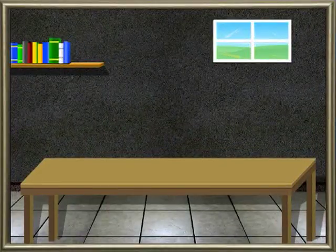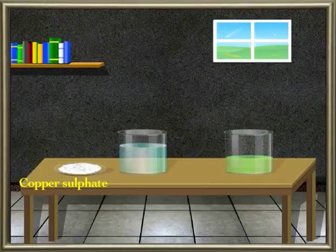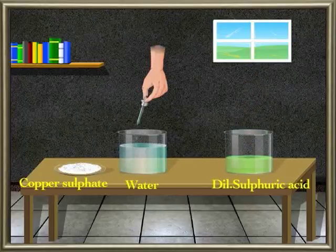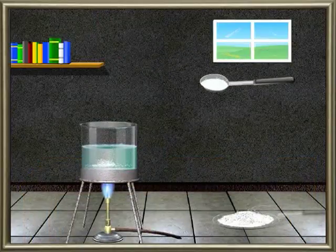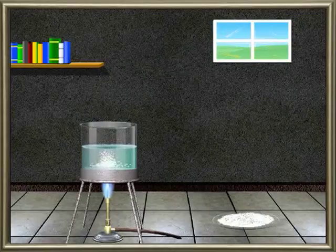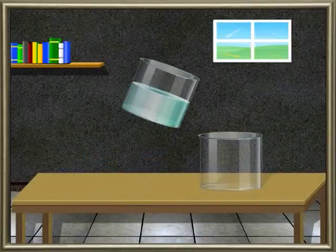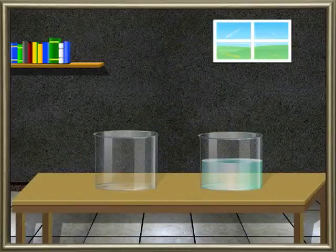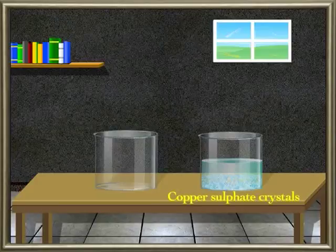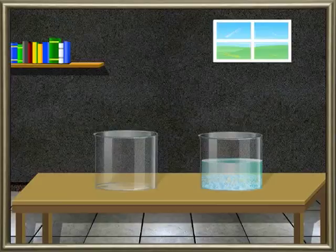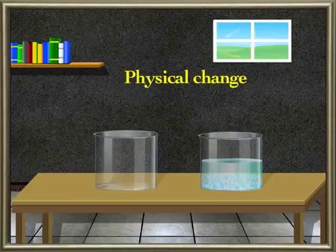Let us see an experiment for physical change. Take copper sulphate crystals, then add diluted sulphuric acid to water and set it to boil. Once the mixture boils, copper sulphate powder dissolves in it. Keep adding the powder until it can't take more. Now the solution is set to cool without any disturbance. After some time, you see crystals settled at the bottom of the solution — these are copper sulphate crystals. This process is called crystallization. Here, no new substances are created, hence this is a physical change.